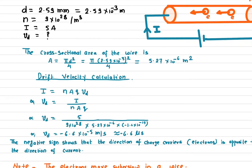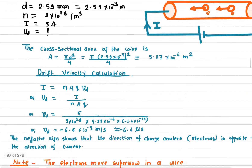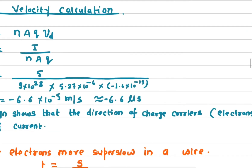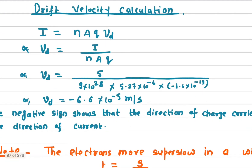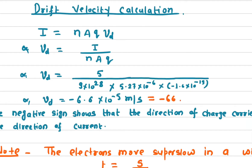The result is on the order of 10 to the negative 5 meters per second. That means in one second, the electrons move about 66 micrometers — which is roughly the thickness of a human hair. So the electrons move super slow.